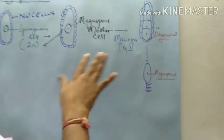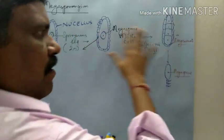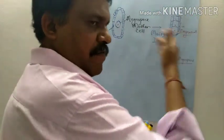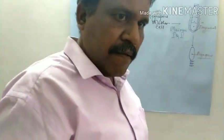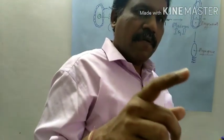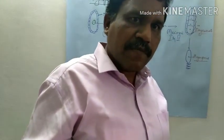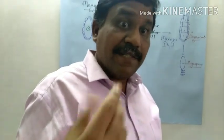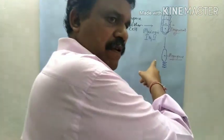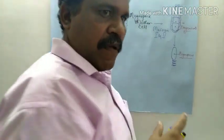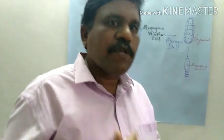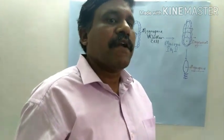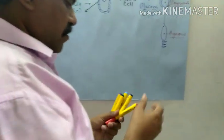So these are the events going on. In the Megasporangium that produces the Megaspore, out of the 4 Megaspores, 3 degenerate and you are left with one. Now from that one Megaspore, the further subsequent divisions will unfold.